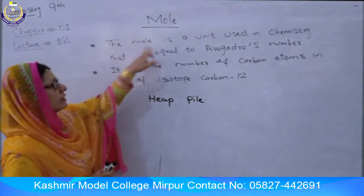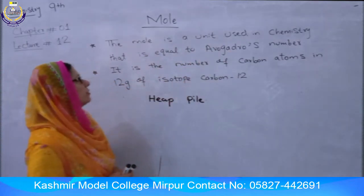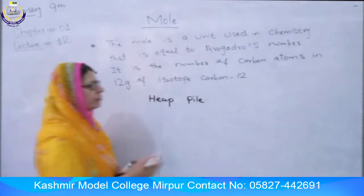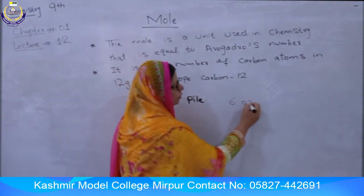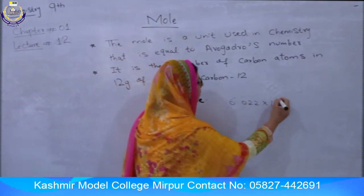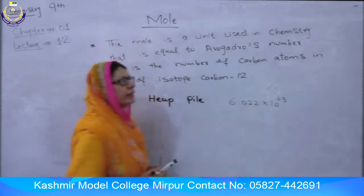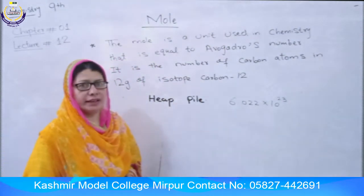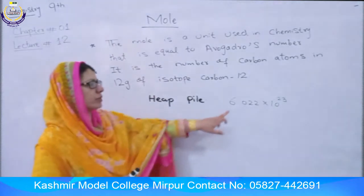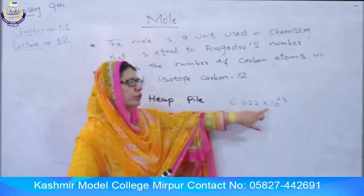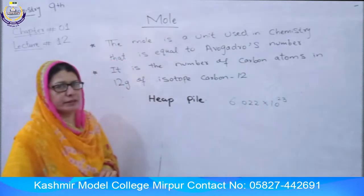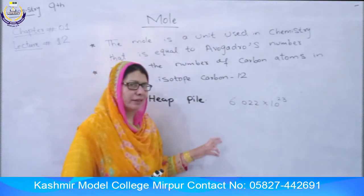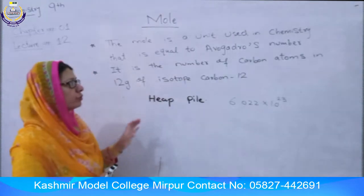In chemistry, the mole is a unit equal to Avogadro's number. Avogadro's number is 6.022 × 10²³. This means that 1 mole contains 6.022 × 10²³ particles — particles being atoms, molecules, ions, and formula units.